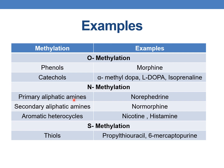Drugs or endogenous substances that undergo N-methylation are primarily primary aliphatic amines, secondary aliphatic amines, and aromatic heterocyclics. Examples of primary aliphatic amines are norepinephrine; secondary aliphatic amines include normorphine; and aromatic heterocyclics include nicotine and histamine. For S-methylation, compounds that undergo this reaction are thiols, with examples including propylthiouracil and 6-mercaptopurine.